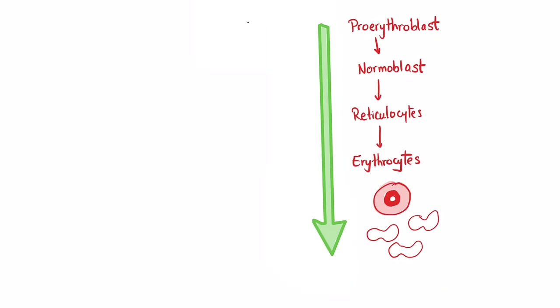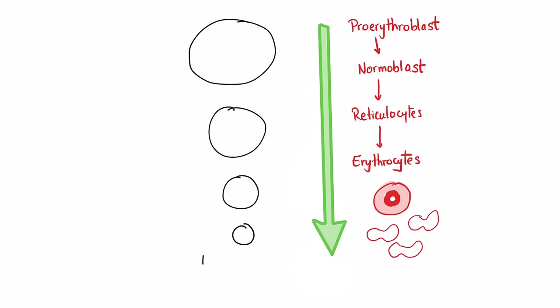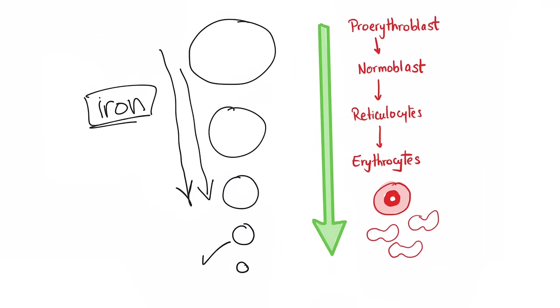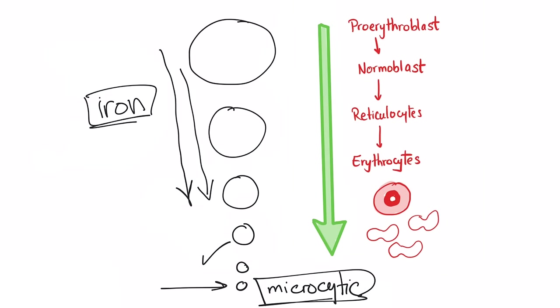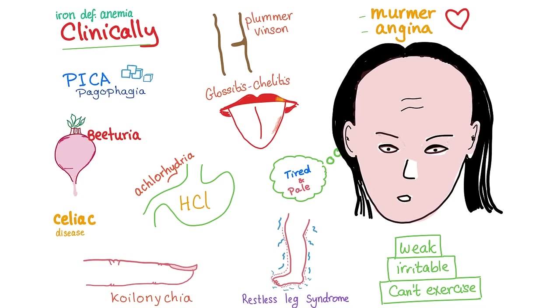In hematopoiesis, cells go from pro-erythroblast down to the mature erythrocyte — they start big and get smaller and smaller. The cells are waiting for iron, so if iron is not coming they keep decreasing in size. That's why it's called microcytic anemia. Being so small also makes the hemoglobin inside them look relatively bigger — hypochromic.